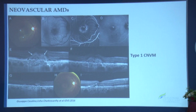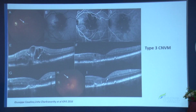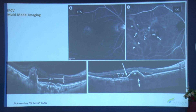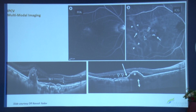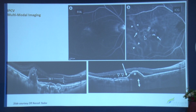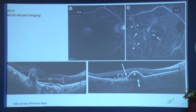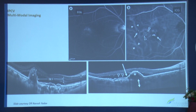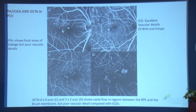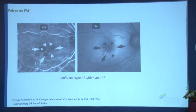For neovascular AMD, you can identify where the lesion is — type 1, type 2, type 3, and IPCV — and correlate multimodal images with FA, ICG, and OCT. You can determine where the PCV likely lies and where to perform laser treatment, as Dr. Jacob was discussing. You can compare this with ICG and OCTA; polyps on FA show confluent hypo-autofluorescence with a hyperfluorescent center.